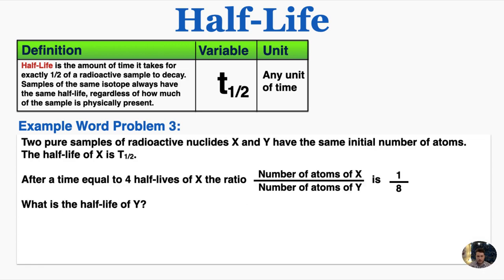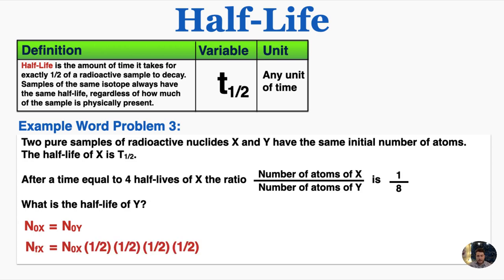Example 3 is a little more complicated. Two pure samples of radioactive nuclides X and Y have the same initial number of atoms. The half-life of X is capital T subscript one-half. After a time equal to 4 half-lives of X, the ratio of the number of atoms of X over the number of atoms of Y is 1 over 8. What is the half-life of Y? For any complicated physics problem, I don't want to overthink it — I just want to write down everything that I know. I'm going to call capital N subscript O the initial amount of atoms of each substance. So I know that the initial amount of X is equal to the initial amount of Y, and I know that 4 half-lives have passed for X.